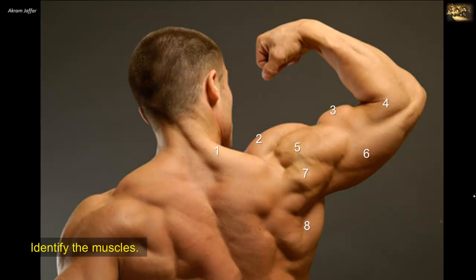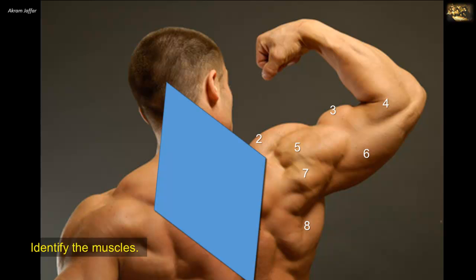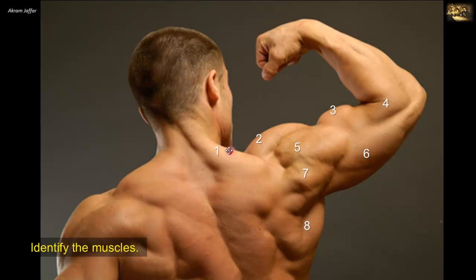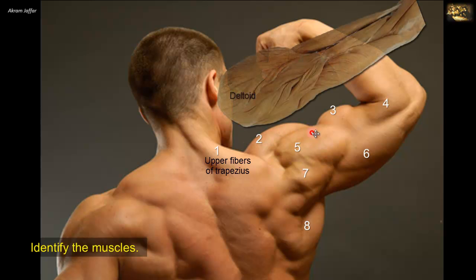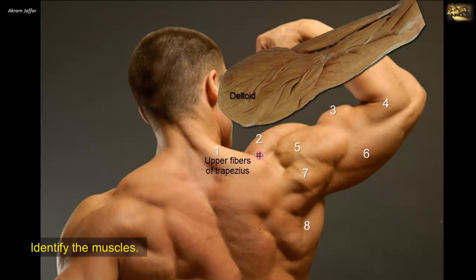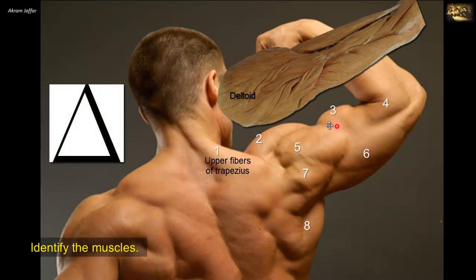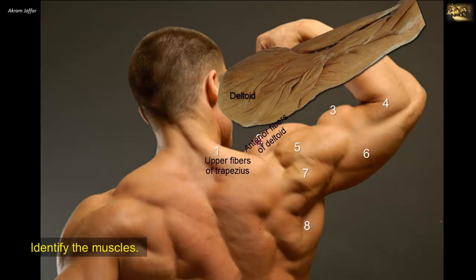Identify the muscles. Number 1 is the most superficial muscle at the back of the neck. The muscle is triangular in shape, and together with its counterpart on the other side forms a trapezoid shape — hence it is called the trapezius muscle; these fibers are the upper fibers of trapezius. Numbers 2, 5, and 7 are three groups of fibers of the deltoid muscle, triangular and delta-shaped, resembling the Greek letter delta, overlying the shoulder joint. Number 2 is the anterior fibers arising from the lateral clavicle, 5 the middle abductor fibers from the acromion, and 7 the posterior fibers from the spine of the scapula.